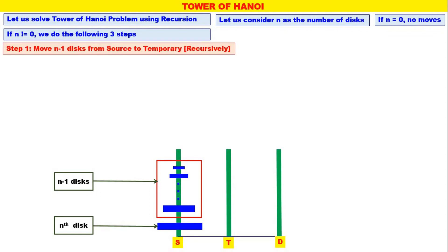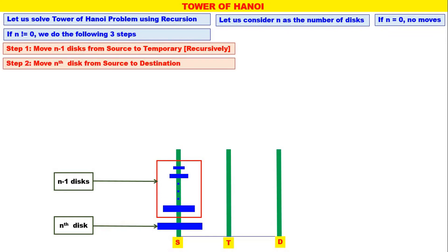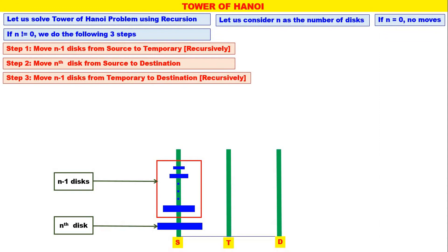Step number 1: move n minus 1 number of disks from Source to Temporary — not at once, but recursively. Step number 2: move the nth disk from Source to Destination. Step number 3: whatever n minus 1 number of disks are there in Temporary, move them to Destination — recursively. Move n minus 1 number of disks from Temporary to Destination recursively.